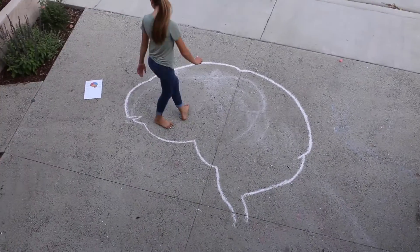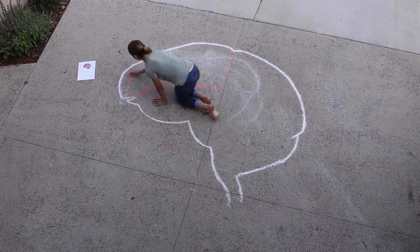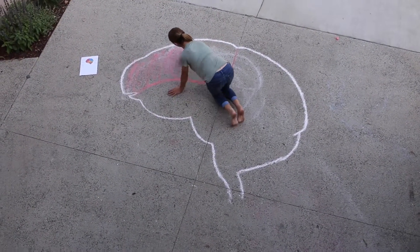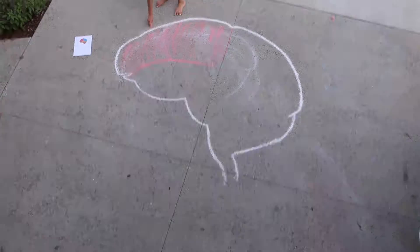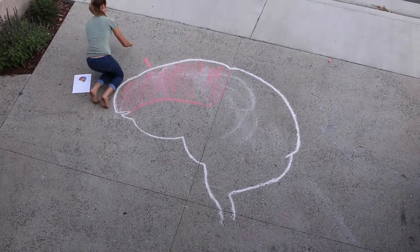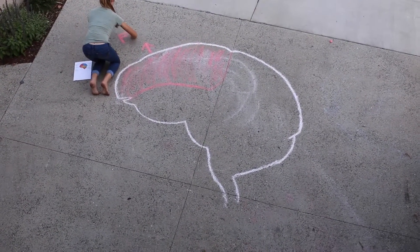Now that we're done explaining the neuron and its main parts, we're moving on to the brain and its four lobes. Let's get started! The lobes are located in the cerebral cortex, which is 80% of the brain. The four lobes are the frontal, parietal, temporal, and occipital.